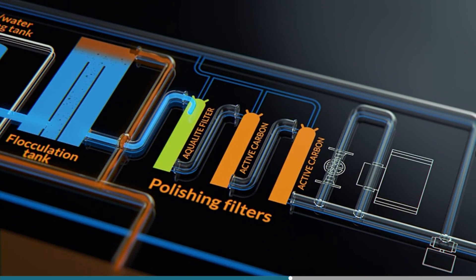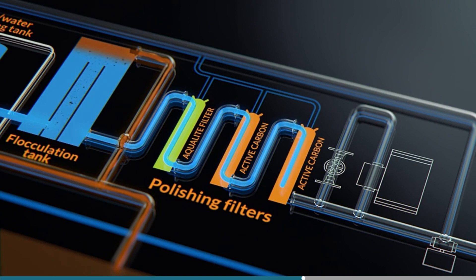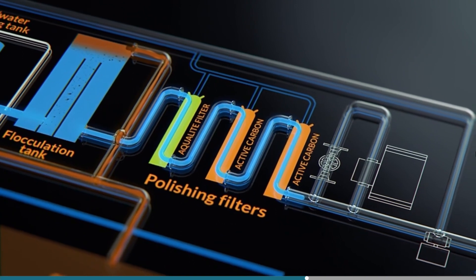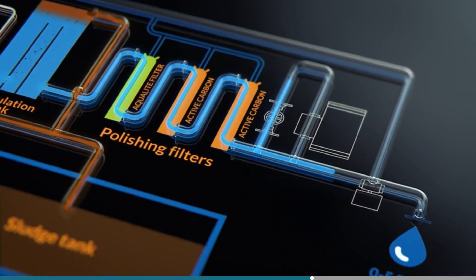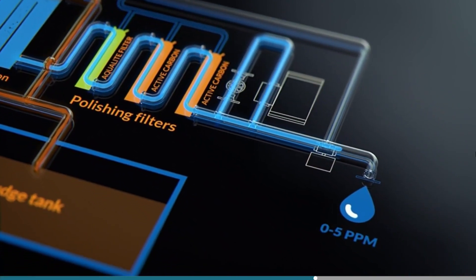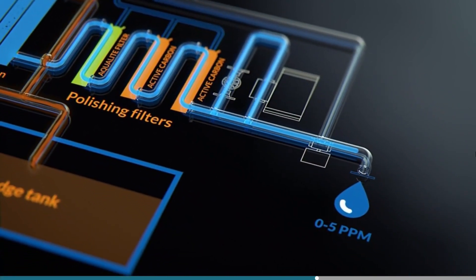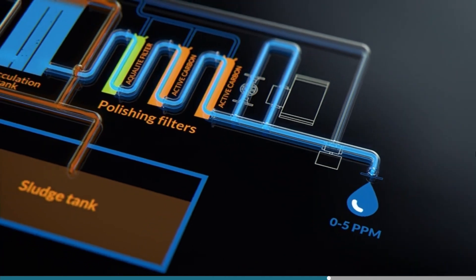The first stage is filled with a coarse sand filtering medium, aqua-like mineral, and the next two stages are filled with active carbon. The clean water leaving the polishing filters can then be discharged via the separator discharge monitoring equipment and an automatic stop and recirculating valve. Used correctly, a discharge of 0–5 ppm can be obtained.